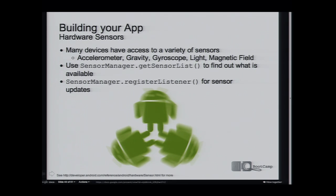One of the most interesting things about writing Android applications is that the devices have fantastic hardware sensors. You have access to cameras, accelerometers, G meters, and light meters — sensors that haven't been available in desktop software development, enabling all kinds of interesting applications. Using the Android system, you can use the sensor manager to find out what sensors are available at runtime, then register listeners to listen for updates. For example, get hold of a G meter and listen for changes in orientation. Really think about what sensors are available now and what's coming, and how you can use that to make a compelling application.